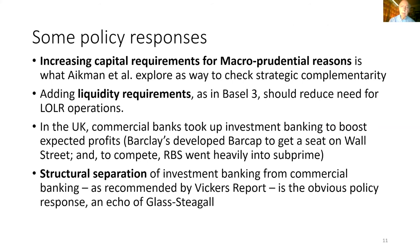Some policy responses to these problems are discussed by these Bank of England economists. One is to increase capital requirements for macro-prudential reasons — not just micro, but macro-prudential reasons — and also adding liquidity requirements, because if you can't access the central bank, you better have your own liquidity. In the UK, commercial banks had in the past taken up investment banking so as to boost expected profits — for example, Barclays developed Barcamp to get a seat on Wall Street, and the Royal Bank of Scotland went big into subprime. Structural separation is trying to reverse this, to get investment banking separated from commercial banking. This is in the Vickers report and it's an obvious policy response, which is an echo of Glass-Steagall.